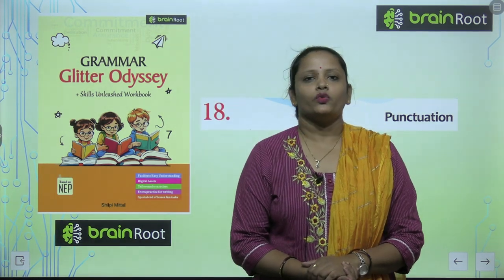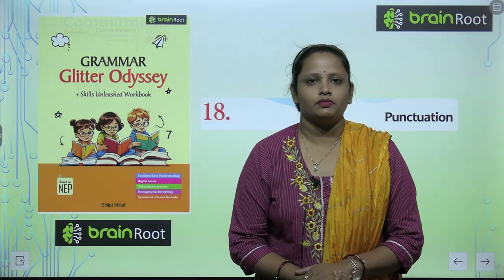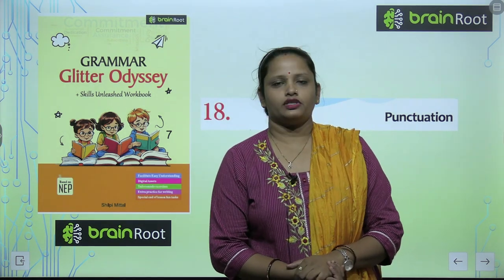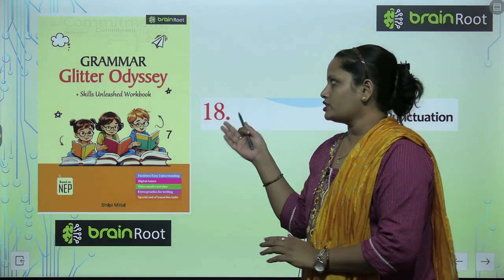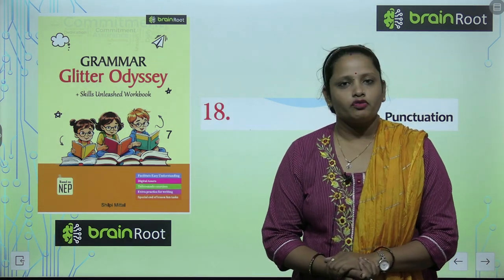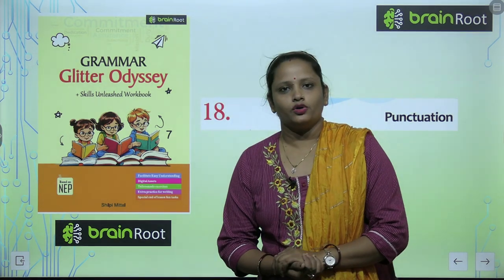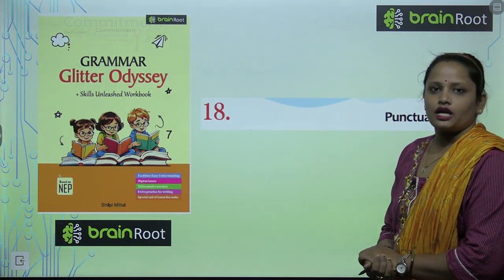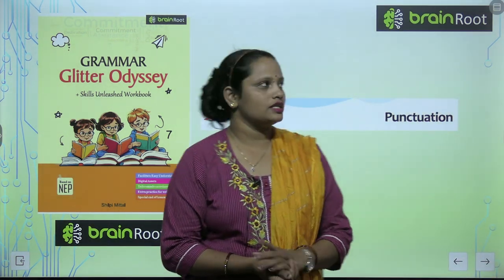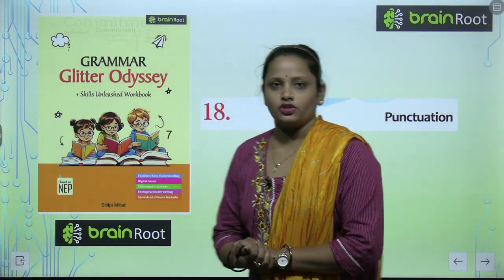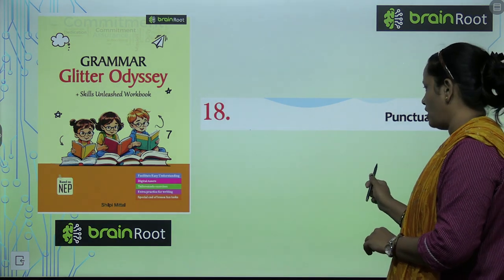Hello my dear kids, welcome back to the Brain Root series by Amit Publishing House. I am Vandana and we are learning English grammar of class 7. Here is a book and the name of the book is Grammar Glitter Odyssey. Today we are going to start with chapter number 18 and the name of the chapter is Punctuation. We are going to learn about various punctuation marks here.